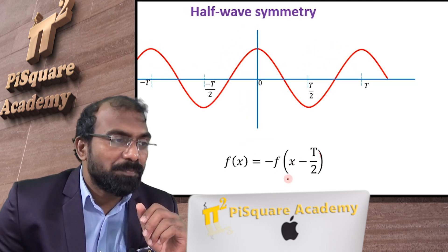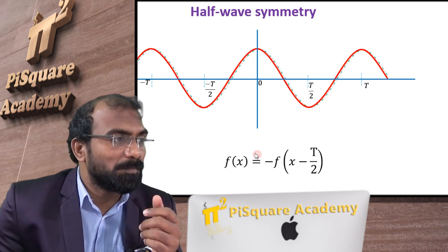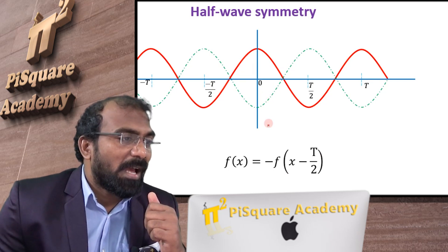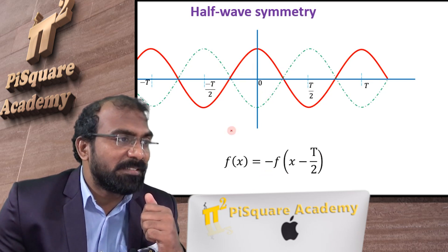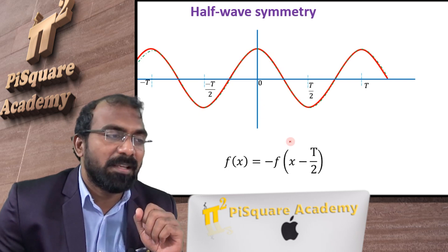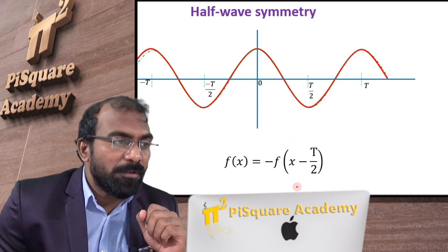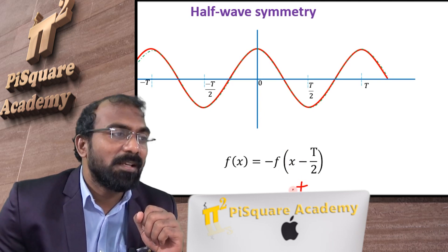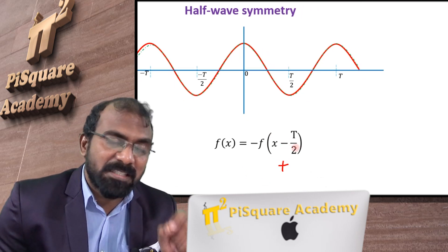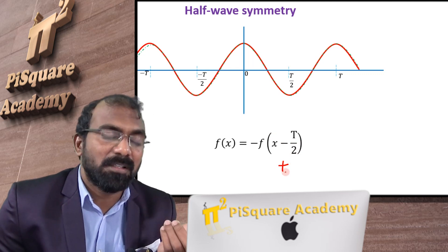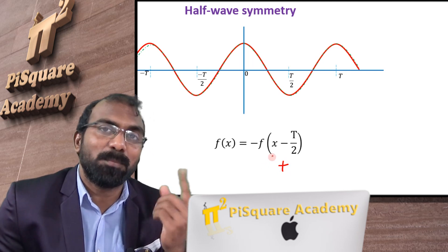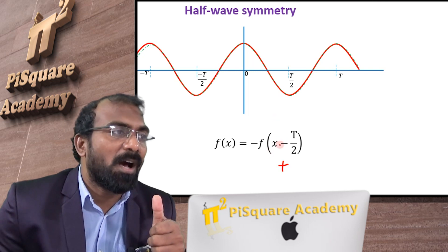First, we have to shift the signal by a length of T by 2. This is the T by 2 shift on the right side — that is a right shift. Now I have to do a flip. If you flip this signal, now these two signals get overlapped. That is what half wave symmetry. Not only the right shift — even if you take left shift also, that will be satisfied. Right shift is x minus T by 2, and if you write x plus T by 2 that will be left shift. Even for the left shift, it will be true. Left shift and then take the flip — both signals will be overlapped. That is what half wave symmetry.